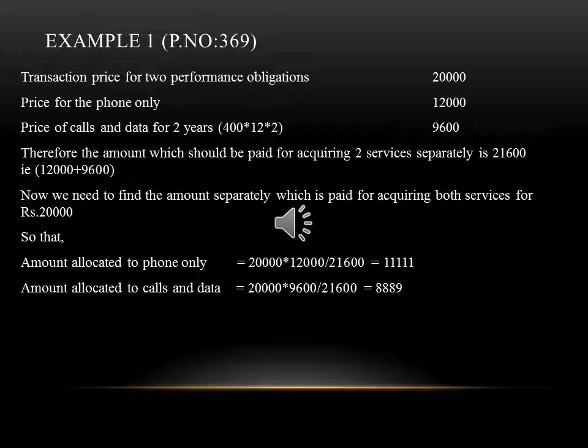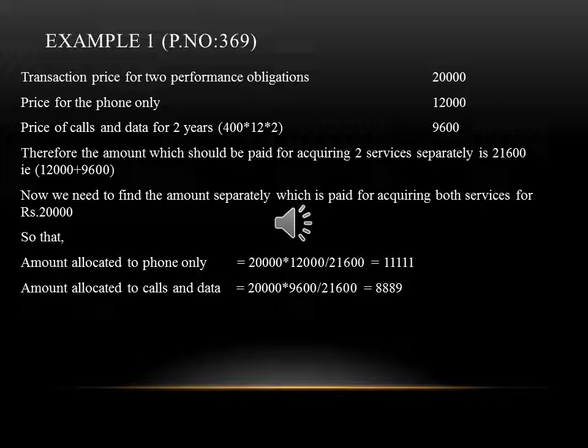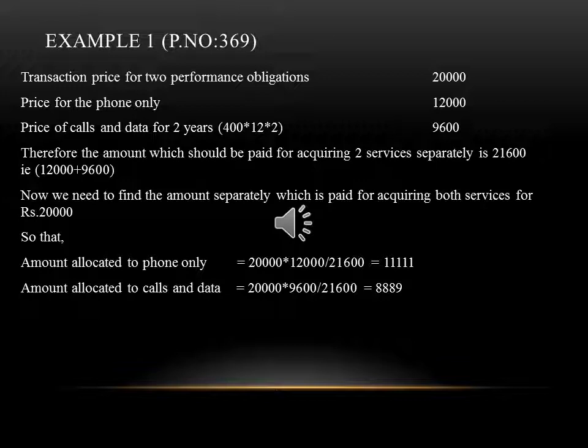If you asked about the answer to the question — for 20,000 rupees covering phone calls and data — the amount allocated to phone only is 12,000 rupees out of 21,600. This is how the calls and data portions are divided within the 20,000 rupees.